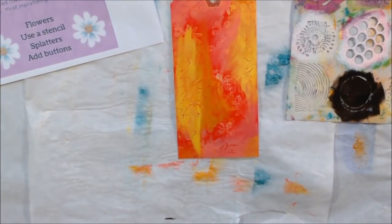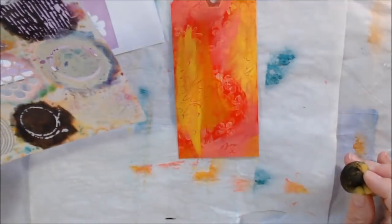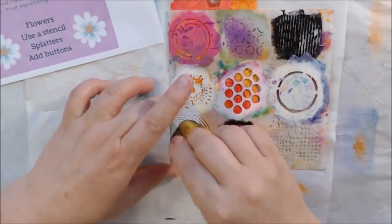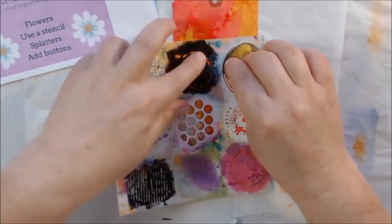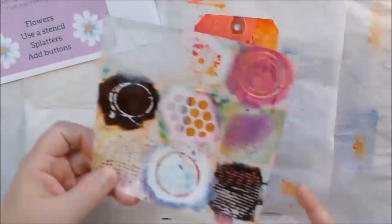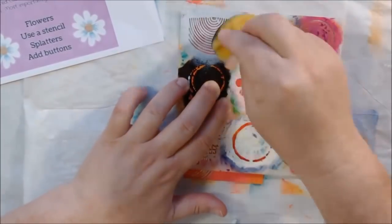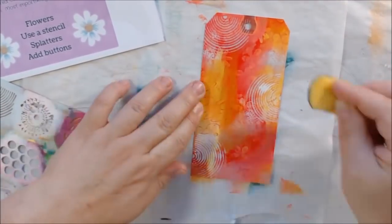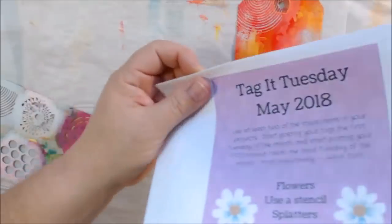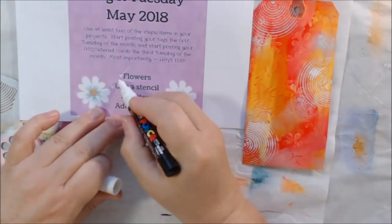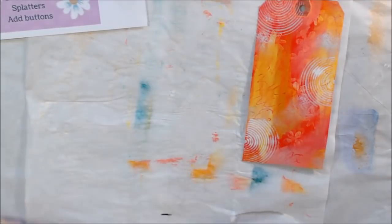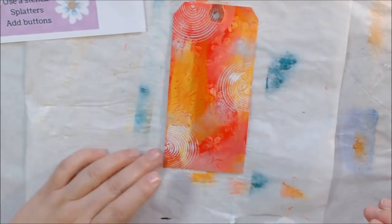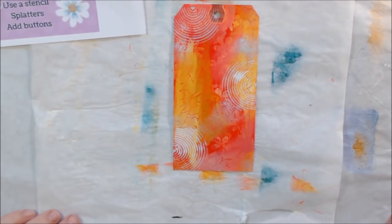Then I did a little bit of mark making with the back of a paintbrush, just kind of scribbling in the wet paint. The next prompt happened to be use a stencil, so I got out this Crafter's Workshop stencil called Well-Rounded. The third prompt is splatters, so I just went ahead and made some splatters.